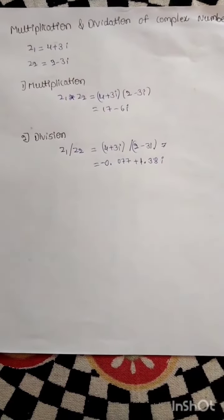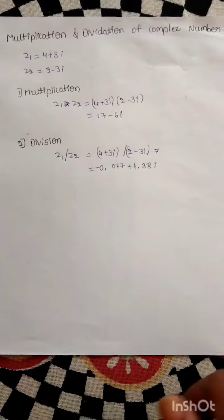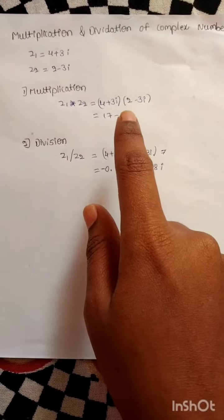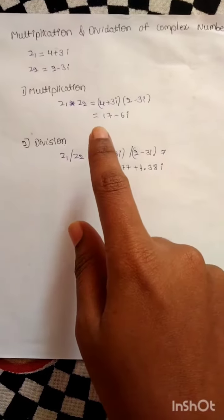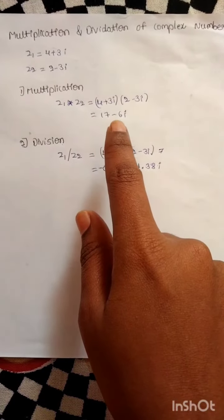Multiplication of a complex number is z1 into z2. z1 equals 4 plus 3i, into 2 minus 3i. z1 into z2 equals 17 minus 6i.